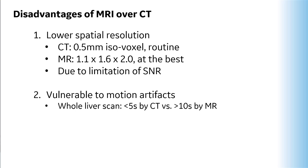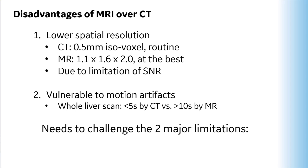However, MRI also has disadvantages compared to CT. First, spatial resolution is lower in MRI. Considering the 0.5 mm isovoxel resolution in CT, MRI has less than half of that spatial resolution due to limited SNR — we are lacking in SNR and enduring low spatial resolution. Second, MRI is vulnerable to motion artifact, especially in patients who cannot hold their breath for the entire scan time, where respiratory motion artifact is obvious. Additionally, whole reverse scan can be done within 5 seconds by CT, but it takes more than 10 seconds by MRI. So we need to challenge these two limitations: SNR and respiratory motion.